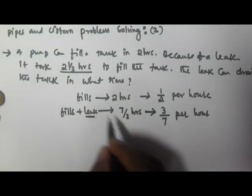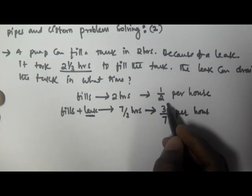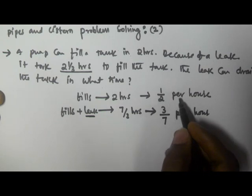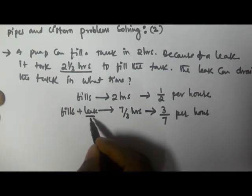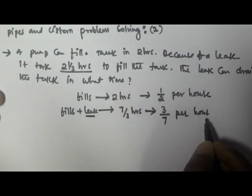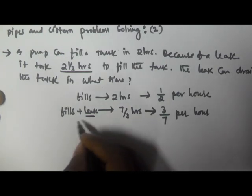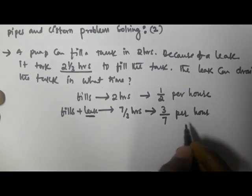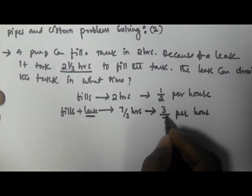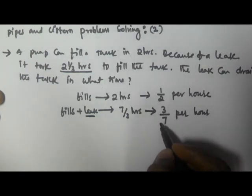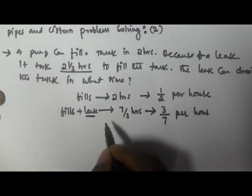In the first case, it fills 1/2 part of the tank per hour. In the second case, it fills with a leak at 3/7 part per hour — this includes filling plus leaking. The first includes only filling. So if we subtract 1/2 from 3/7, we get the part emptied by the leak.